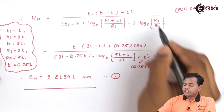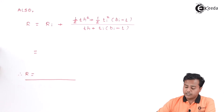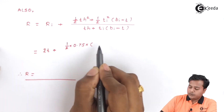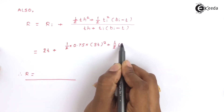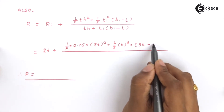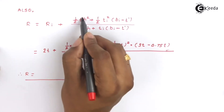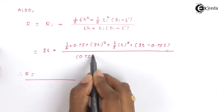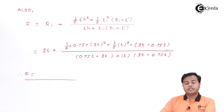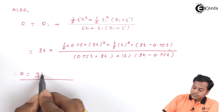Moving ahead, let us find the centroidal radius R. With ri = 2t, h = 3t, ti = t, and bi = 3t minus 0.75t (the t-dash component), substituting these into the expression, R comes out to be 3t. This is expression number 2.